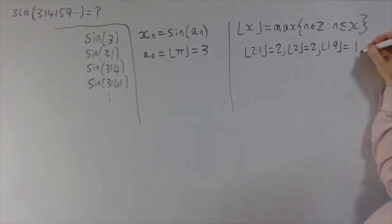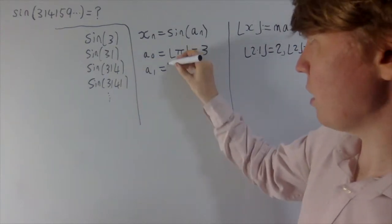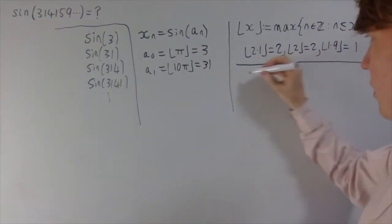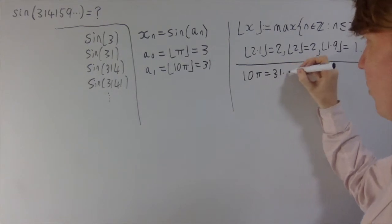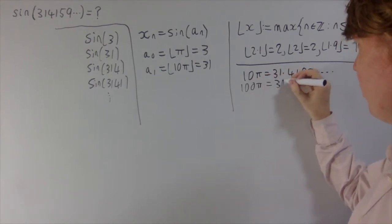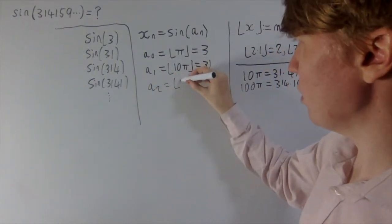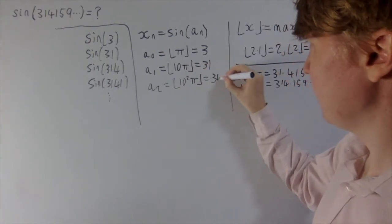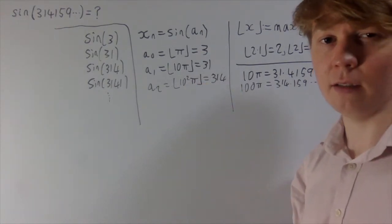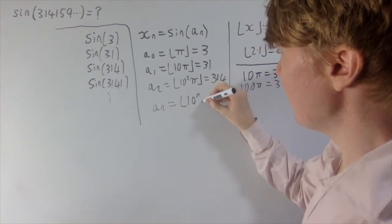This is really helpful because a₁ = 31 is the same as floor(10π), since 10π = 31.4159... For a₂ = 314, that's floor(100π) = floor(10²·π), since 100π = 314.159... So we have a nice way of expressing the nth term: aₙ = floor(10ⁿ · π).